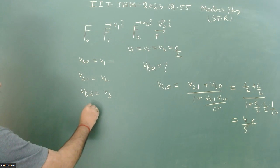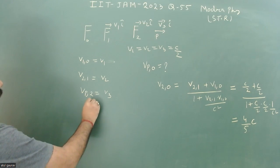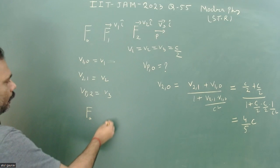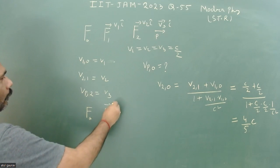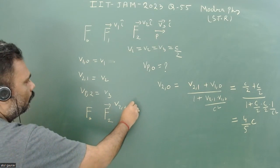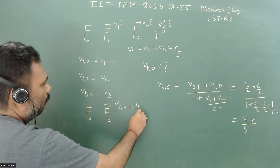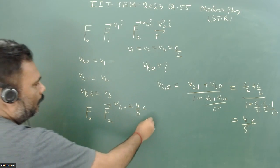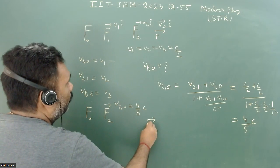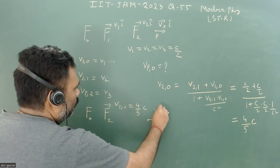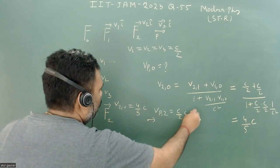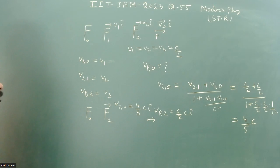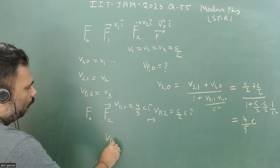Now the problem is reduced: F0 is at rest, F1 is no longer significant, and F2 is moving with respect to F0 at v₂₀ = 4c/5. The particle is moving with respect to F2 with velocity c/2 in the î-cap direction.